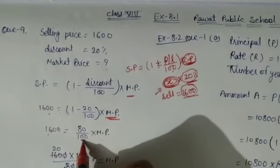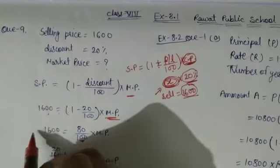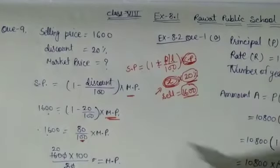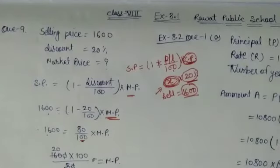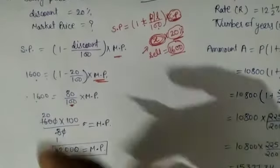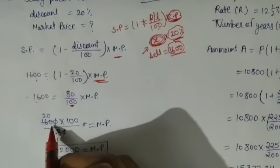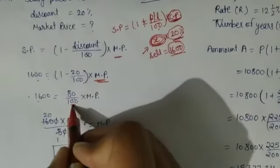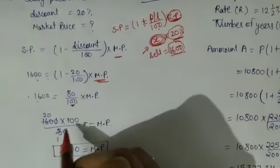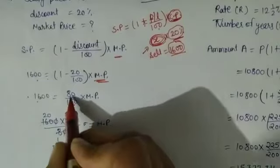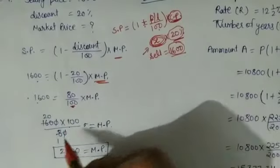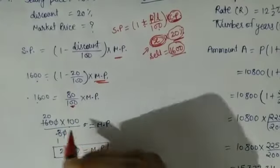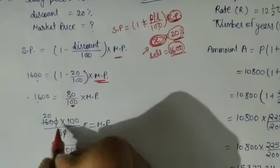Now, 100 is in the denominator — if you move it to the other side it becomes multiply. So 1,600 is equal to 100 into 100 upon 80. The divide becomes multiply and the multiply becomes divide. Equal to 0 cancel.